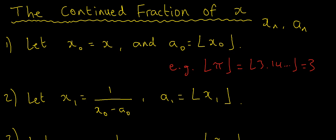In this video I want to do some more examples of continued fractions of irrational numbers. Just as before, I'm going to describe the algorithm we're going to use. Starting from some irrational number x, we want to produce two sequences of numbers, x_n and a_n. These a_n's are going to form the basis of the continued fraction, and I'll show you how we define these sequences.